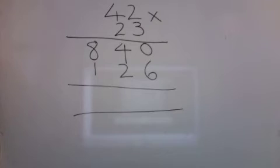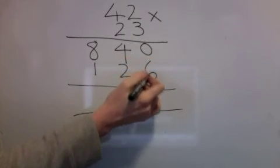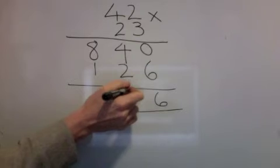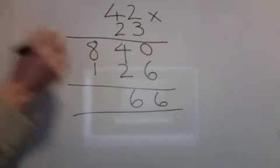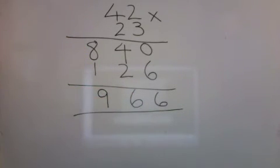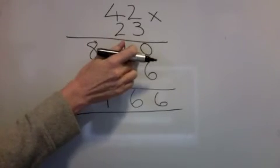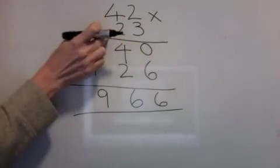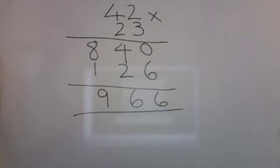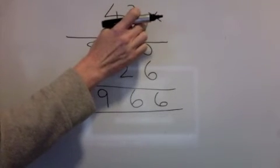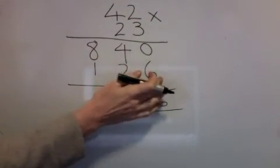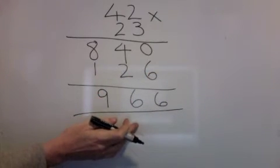Add them together: nothing at six is six. Four add two is six. Eight add one is nine. So first of all, nought down. Times by the tens, then times by the units — in both cases, start with the units first and work this way. Add them together and you get your answer.